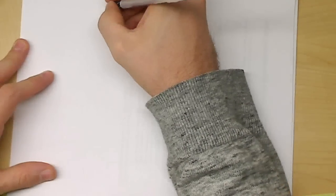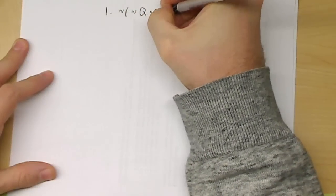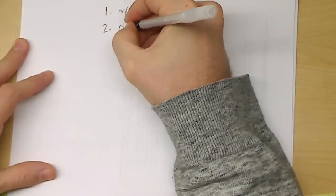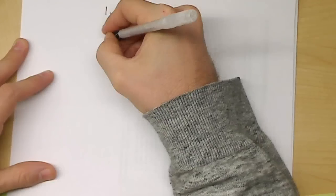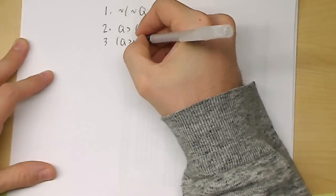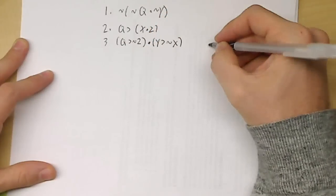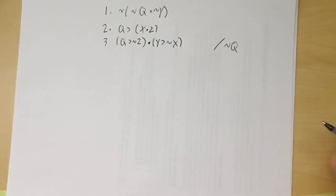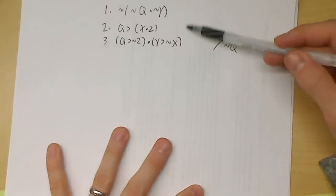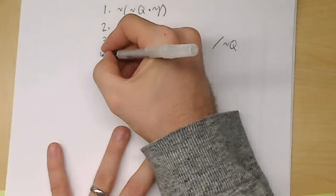Okay, so that was the first problem with the rules of replacement. Let's do a second problem. This is the second problem using the rules of replacement one. We have ¬(¬Q∧¬Y) as line one. Line two is Q→(X∧Z). Line three is Q→((¬Z∧Y)→¬X). And the conclusion we're looking for here is ¬Q. So we just want to get Q by itself. Write this problem down, pause the video and see if you can figure out how to do it.